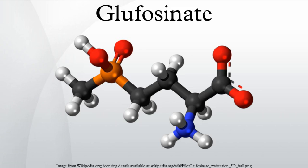Phosphinothricin is a glutamine synthetase inhibitor that binds to the glutamate site. Glufosinate-treated plants die due to a buildup of ammonia and corresponding decrease in pH in the thylakoid lumen, leading to the uncoupling of photophosphorylation. The uncoupling of photophosphorylation causes the production of reactive oxygen species, lipid peroxidation, and membrane destruction. Elevated levels of ammonia are detectable within one hour after application of phosphinothricin.